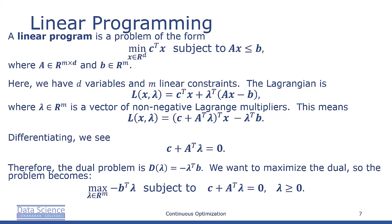The Lagrangian in this case is given by L(x, λ) = c^T x + λ^T(Ax - b).